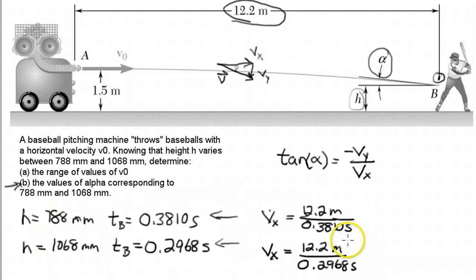We actually calculated this previously. This works out to be 32 meters per second, and this one is 41.1 meters per second. So those are the x components of the velocity.